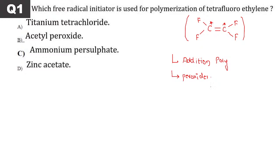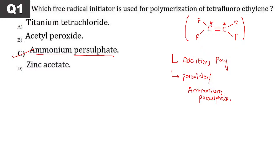For teflon's preparation, you can use peroxide as well as ammonium persulfate. The textbook has this line — open the teflon paragraph in your textbook and you'll see the same line. Option number C is highlighted there.